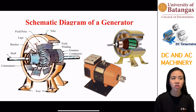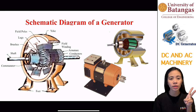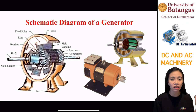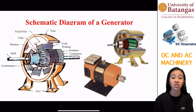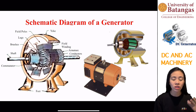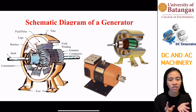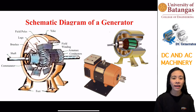A dynamo, which is a rotating machine that converts energy, has two classifications. It can be called an electrical generator or an electrical motor. Energy transformation happens between mechanical energy and electrical energy. If the transformation is from mechanical to electrical, that's an electrical generator.